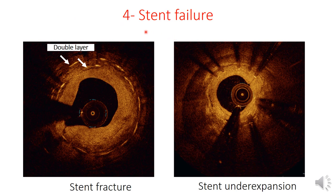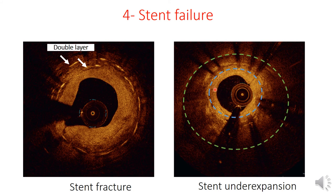OCT is very important also in assessment of stent failure — a class 2a indication. Before putting a stent into a failed stent, we should know the cause of failure. It is not the same when we see stent fracture with a double-layer sign versus an under-expanded stent. By coronary angiography you cannot differentiate these. If you end up putting a stent inside an under-expanded stent, you add another pathology. But with intravascular imaging showing a severely under-expanded stent, you can alter management: perform stent optimization with high-pressure non-compliant balloon inflation, then consider only a drug-coated balloon inside.